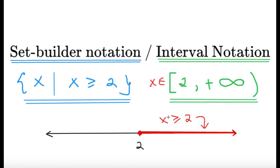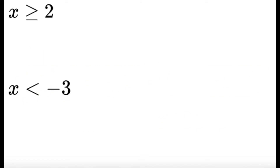We're going to dive into how to write the set builder notation and the interval notation by providing examples. The first examples are two simple ones: x ≥ 2 and x < −3.